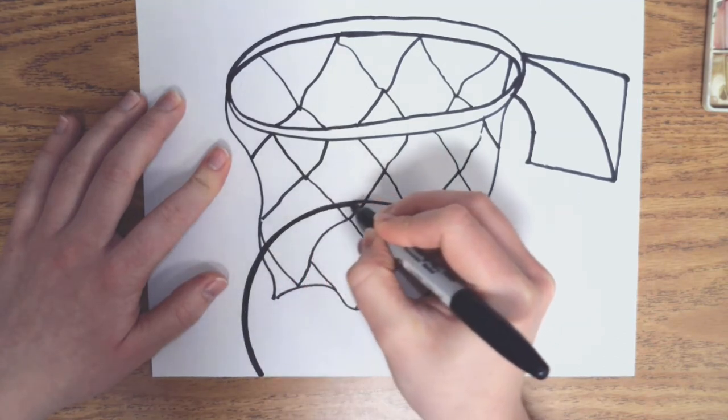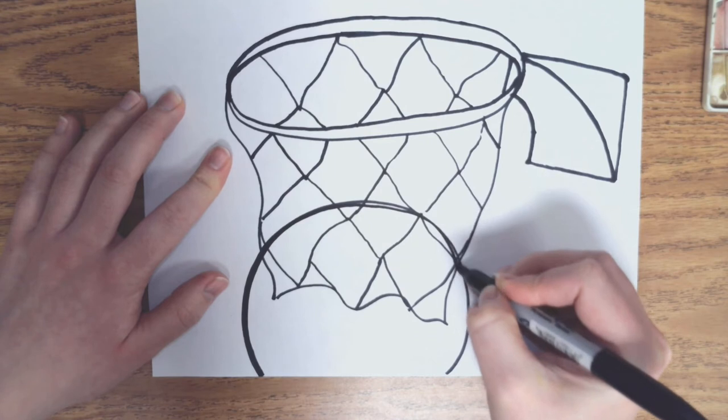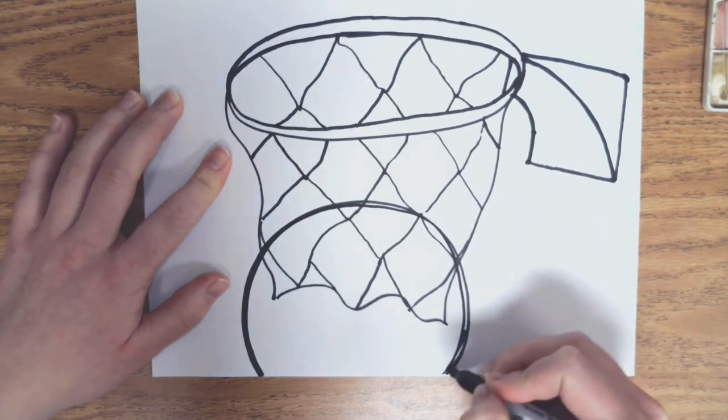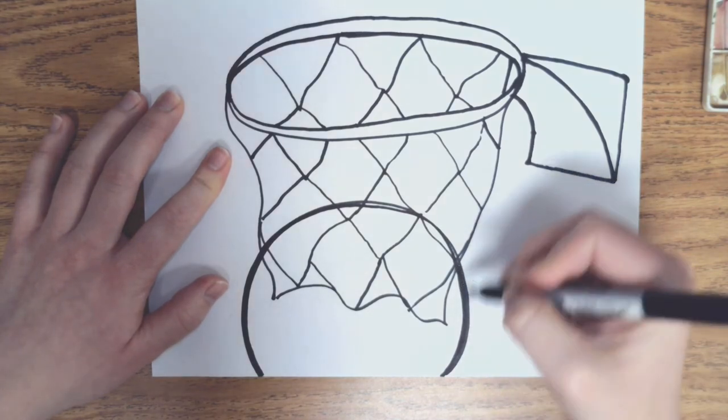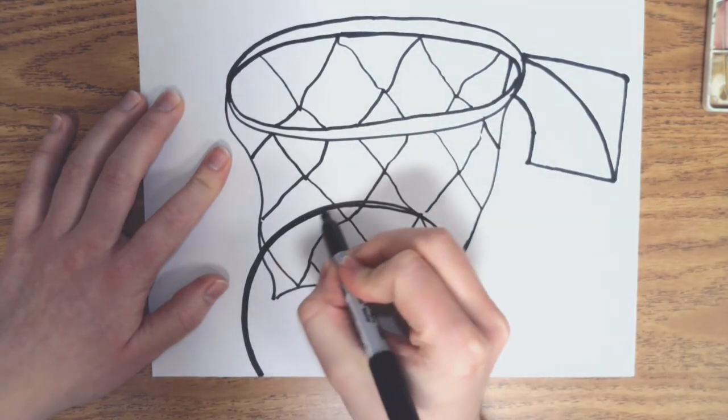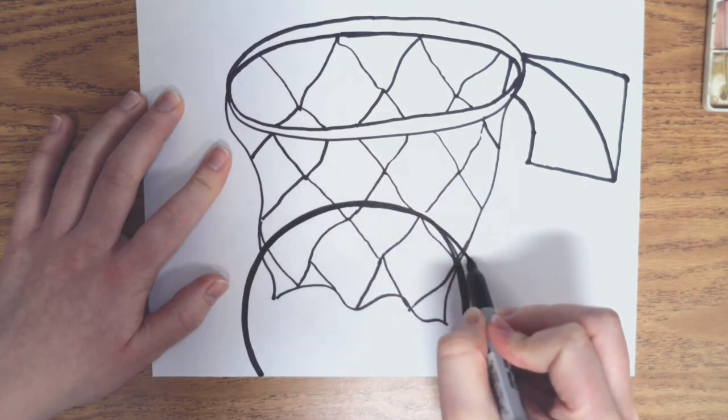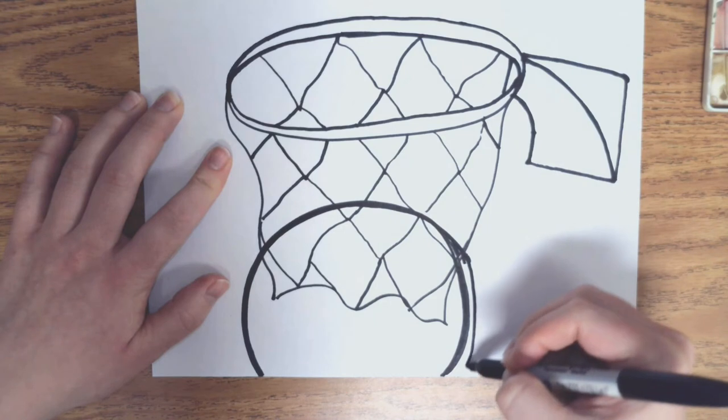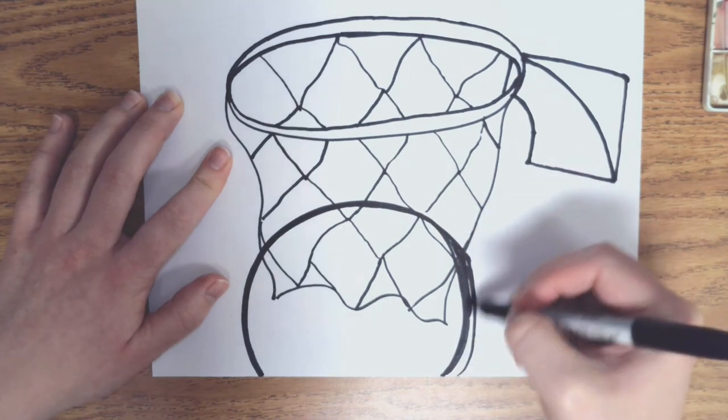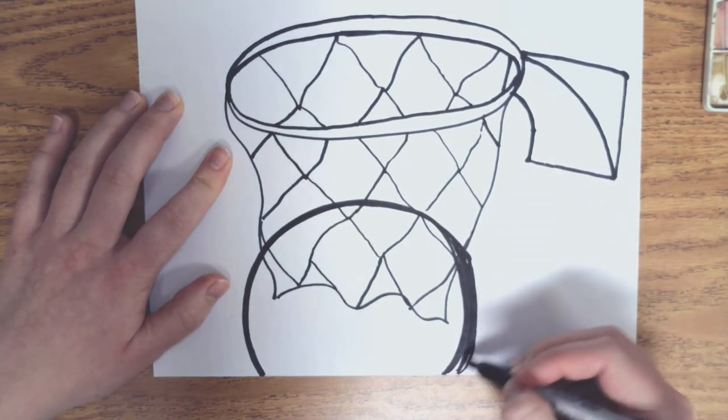Now what I'm going to do is I'm darkening the line of my basketball. Because on basketballs, they have the lines that are dark and black. So that's what I'm drawing in right now. Went a little bit too far, but that's okay. I'm just going to make my basketball line a little wider then.